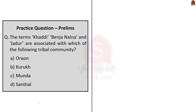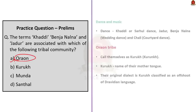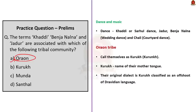The terms Kadi, Banja, Nalna, and Jadur are associated with the Oraon tribe — these are some of the folk dances performed by the Oraon tribal community. The correct answer is option A.